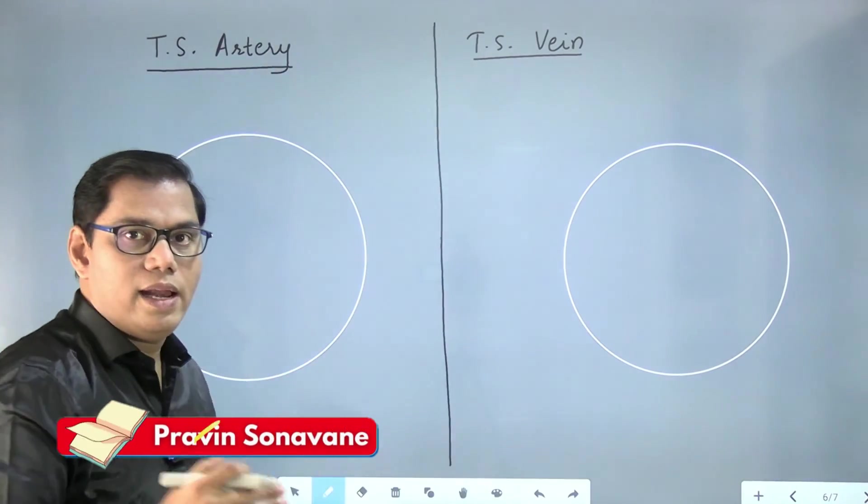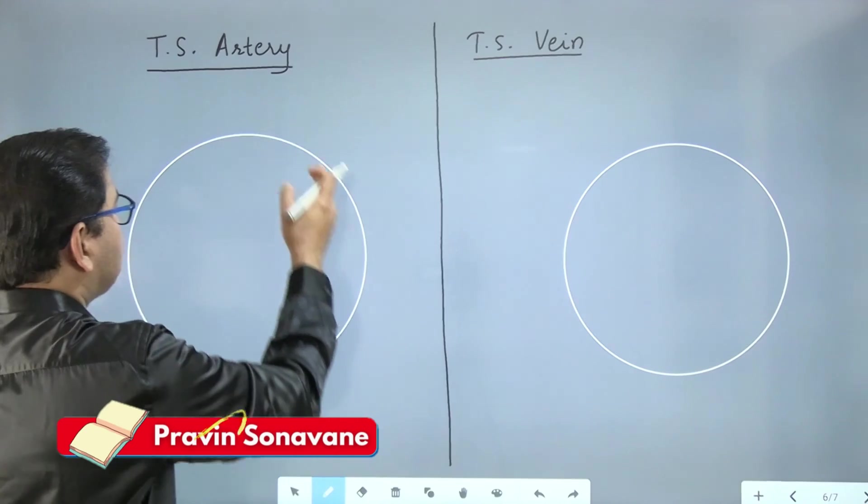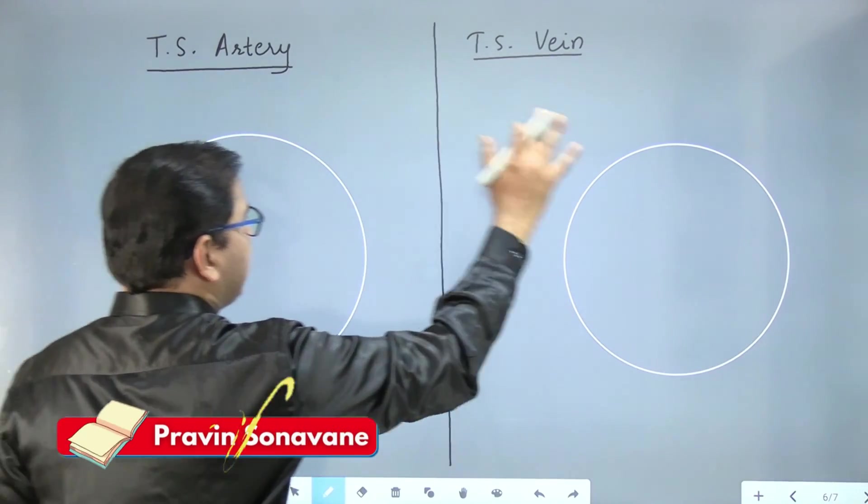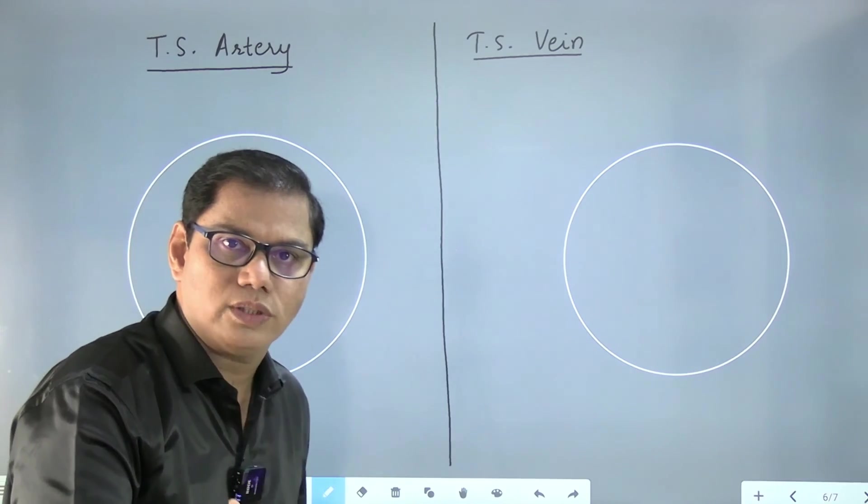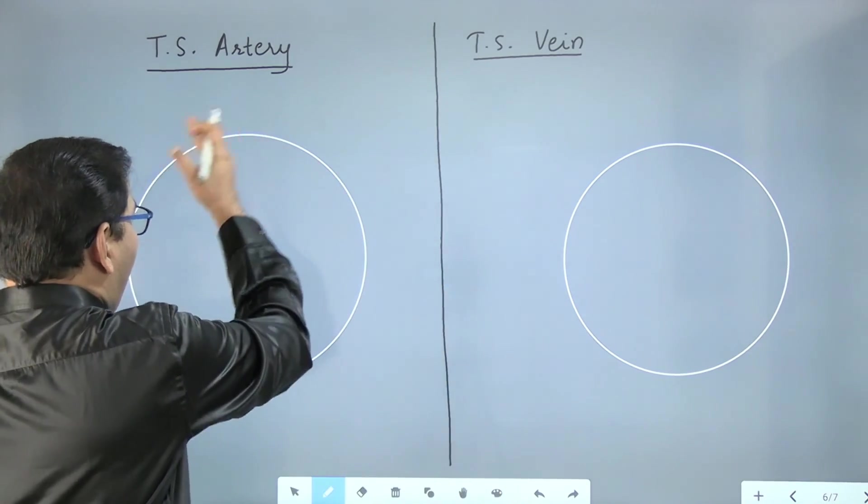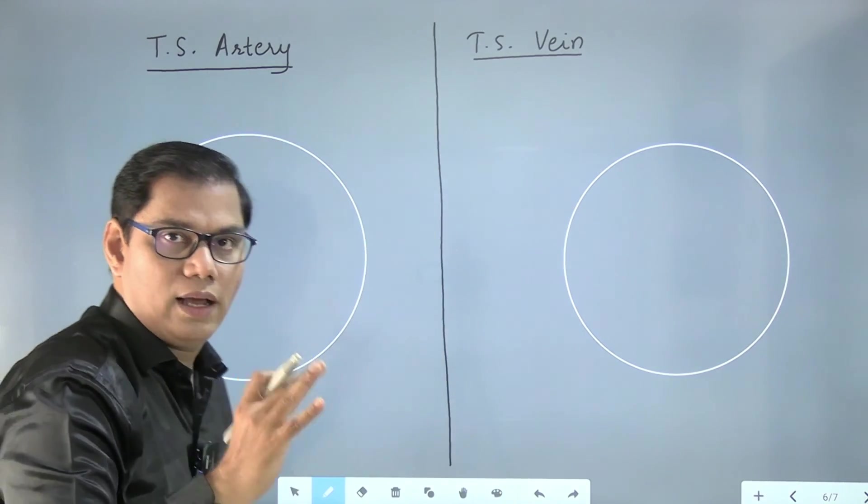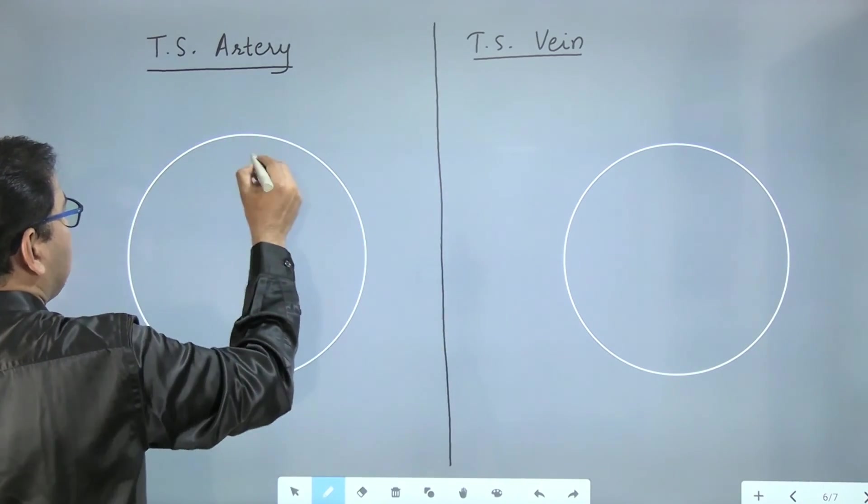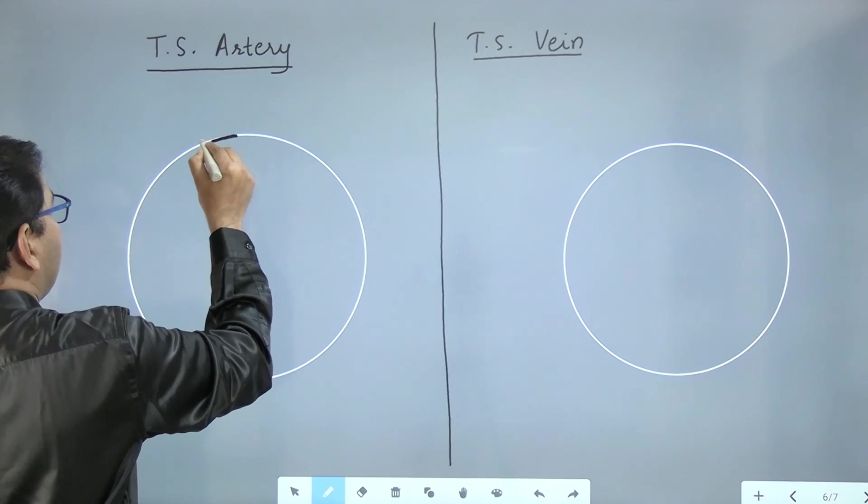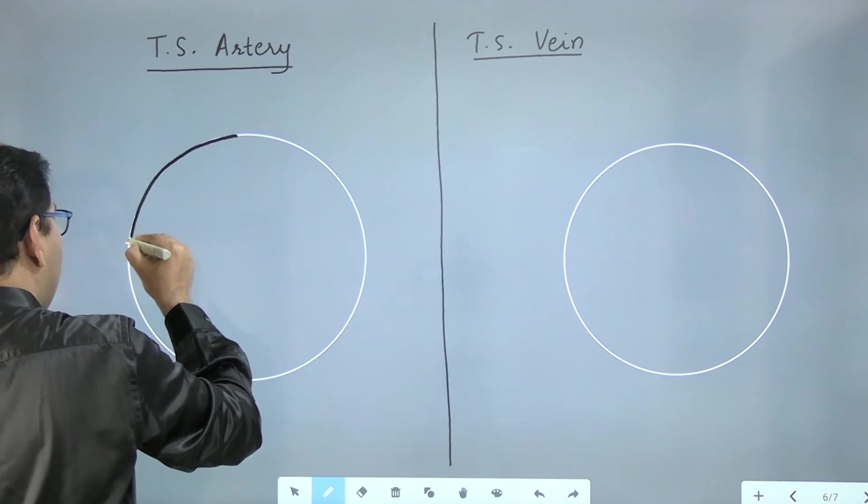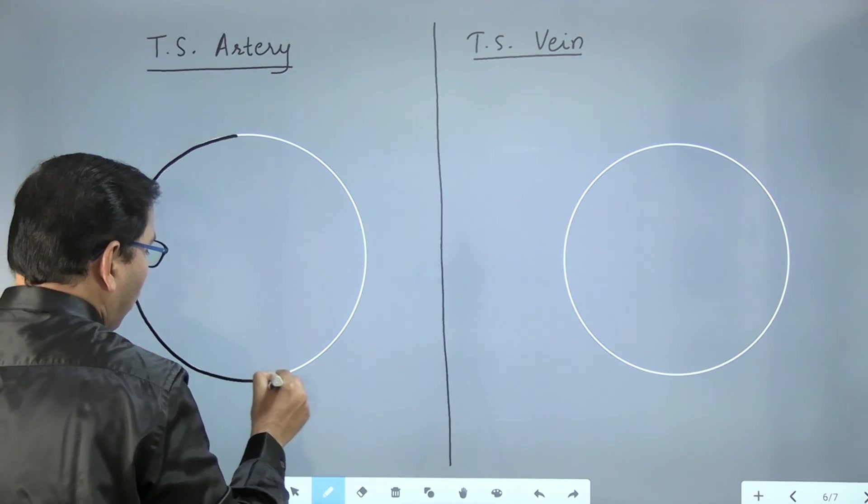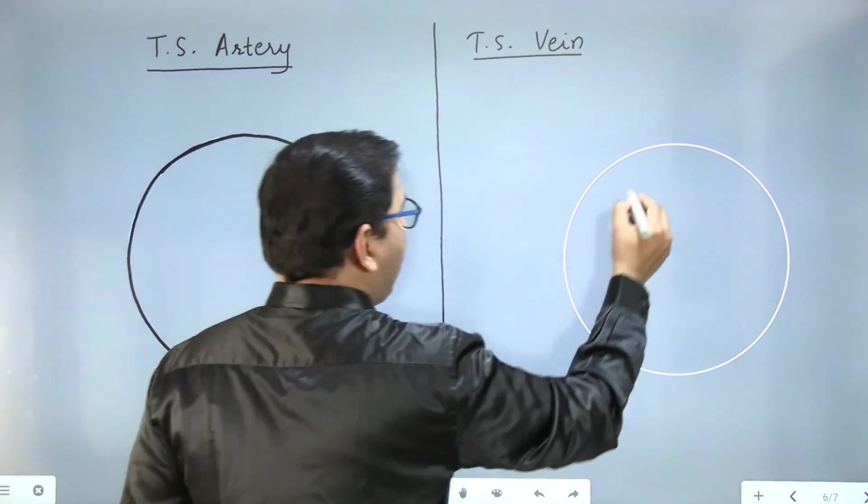Both the arteries and veins have three layers. We will start with the outermost layer. When we draw the diagram, you can use a compass also if you are not good at drawing circles. So first we will start with the external circle or the external layer. And then I will draw and do overwriting on it.